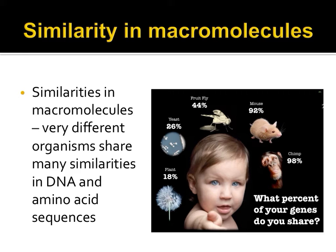Unicellular yeast are more than a quarter similar to humans. An explanation for these similarities between these very different organisms is that at one point they shared a common ancestor. The more similarity between individuals, the more recent that they shared some common ancestor.